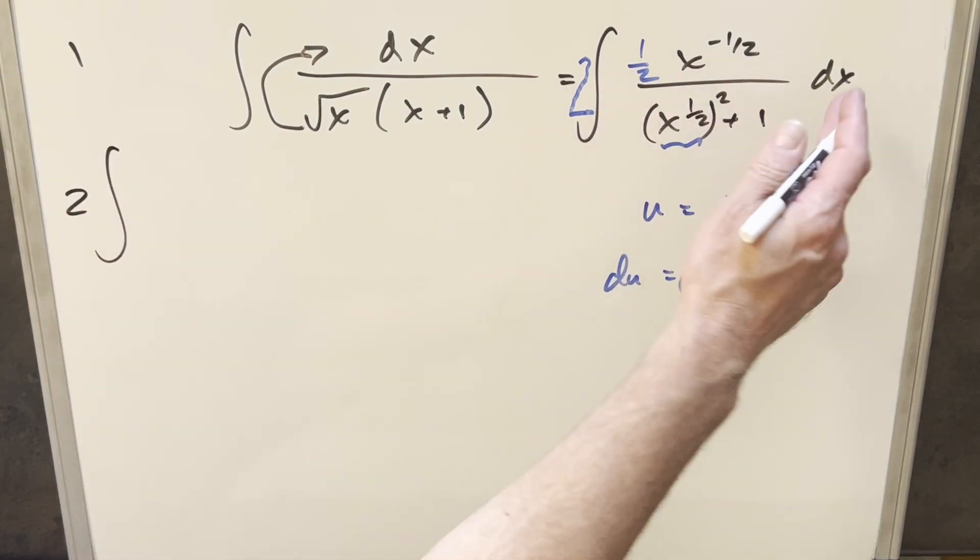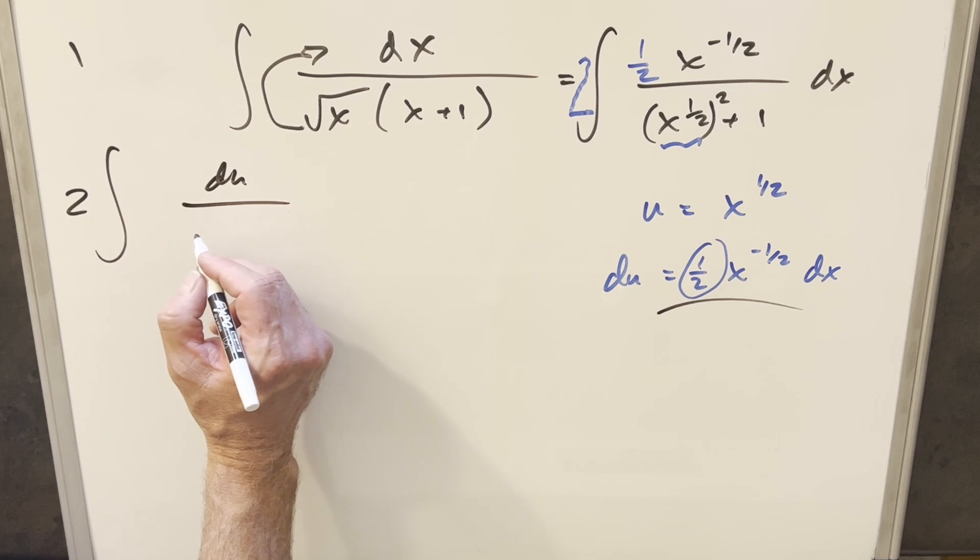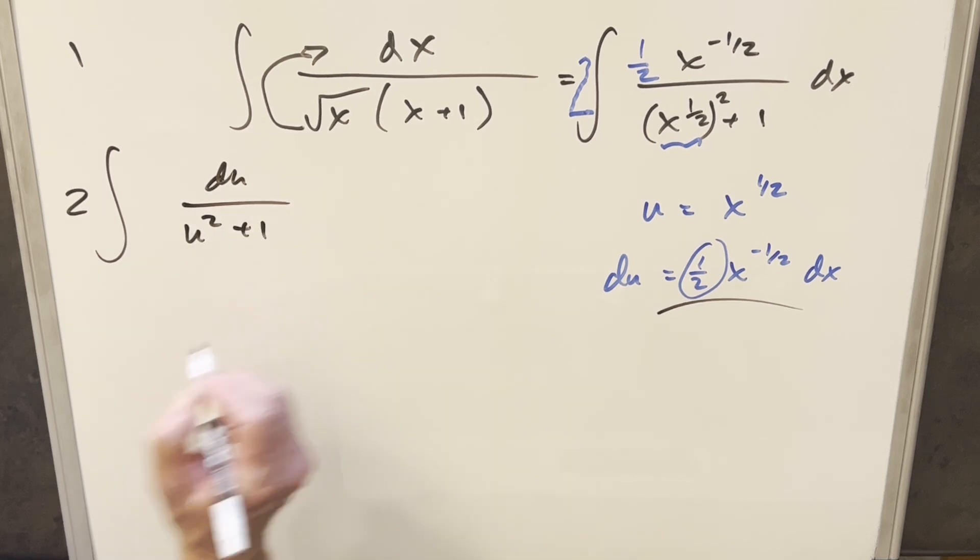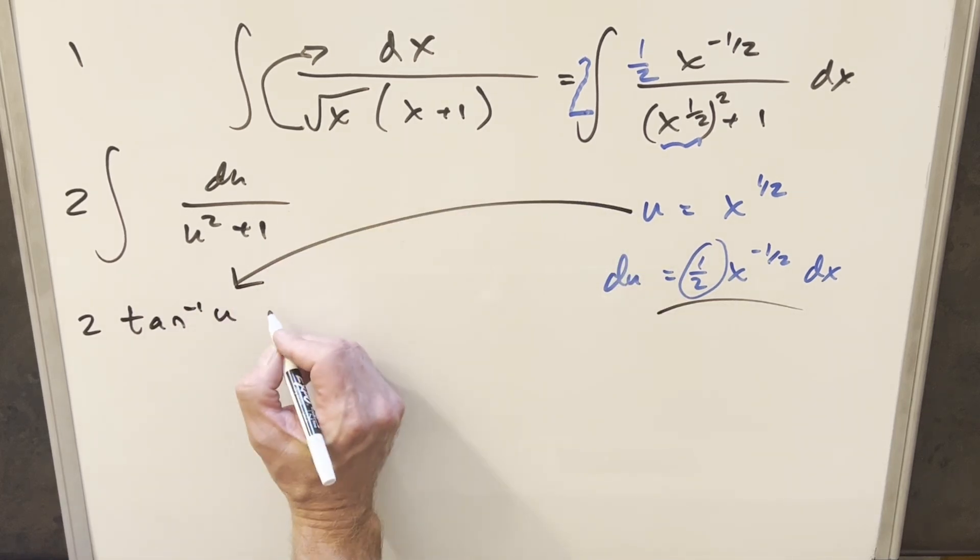So then we'll just go ahead and substitute. Starting with the two, the whole numerator is going to be this du value here. So we're going to have du over u squared plus one. Go ahead and integrate this, it's just going to be arctan. So we end up with two times arctan of u,